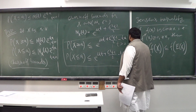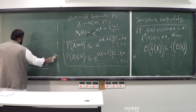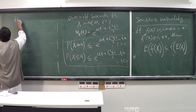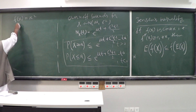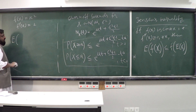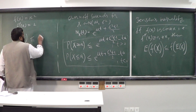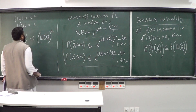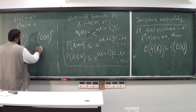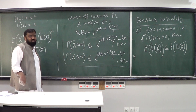This inequality is interesting because there are lots of very interesting consequences. For example, f(x) = x² is a convex function because its second-order derivative is 2. By this inequality, E[x²] ≤ (E[x])², which means the square root of E[x²] is less than or equal to E[x]. Proving this inequality directly would be pretty challenging.